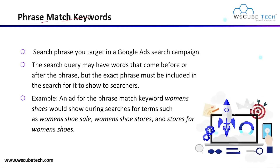Next we have Phrase Match keywords. As the name shows, the search phrase you target in a Google Ad search can show for terms like 'women shoes sale,' 'women shoes store,' or 'stores of women shoes' — meaning these are slightly varied from your exact match keyword.